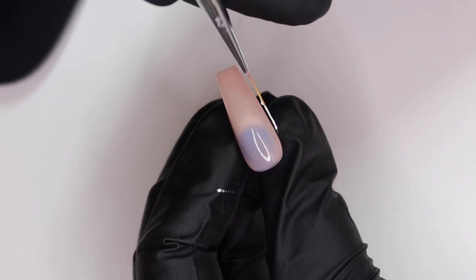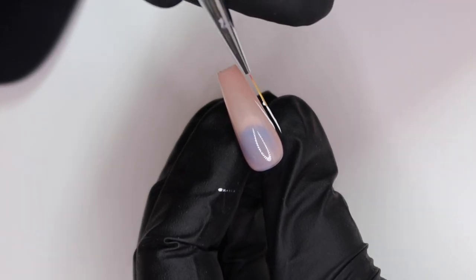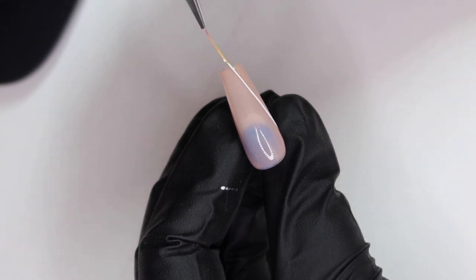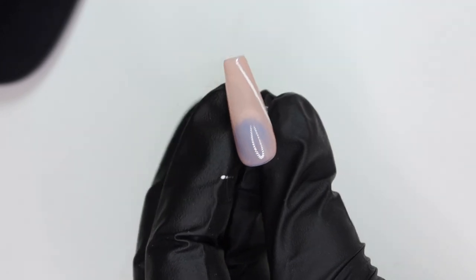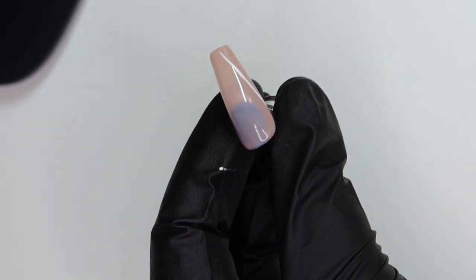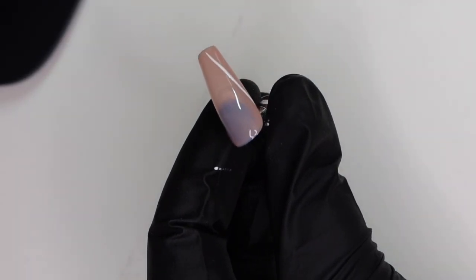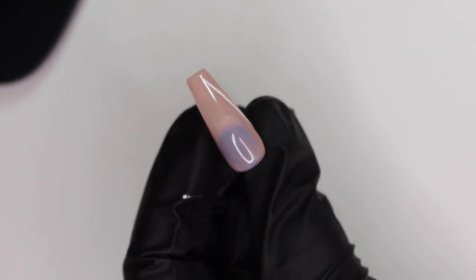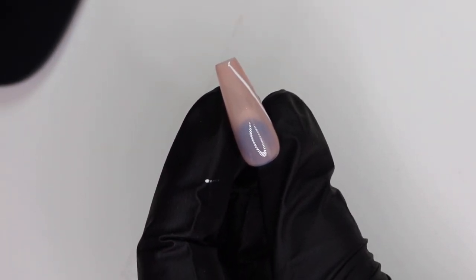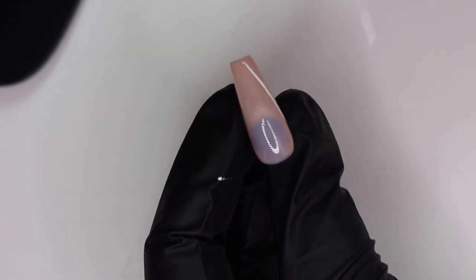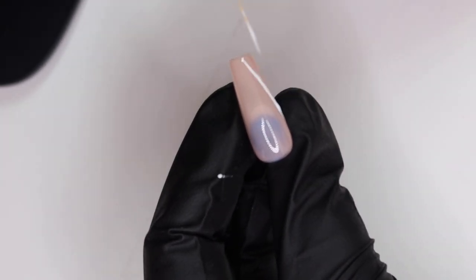I'm going to be using my handy dandy striping brush and we're going to start with half tips. The striping brush does all the work for you. I dip the brush into white gel polish, make sure there's not too much on there, just a little bit, and I drag the brush across the nail making a super straight line.